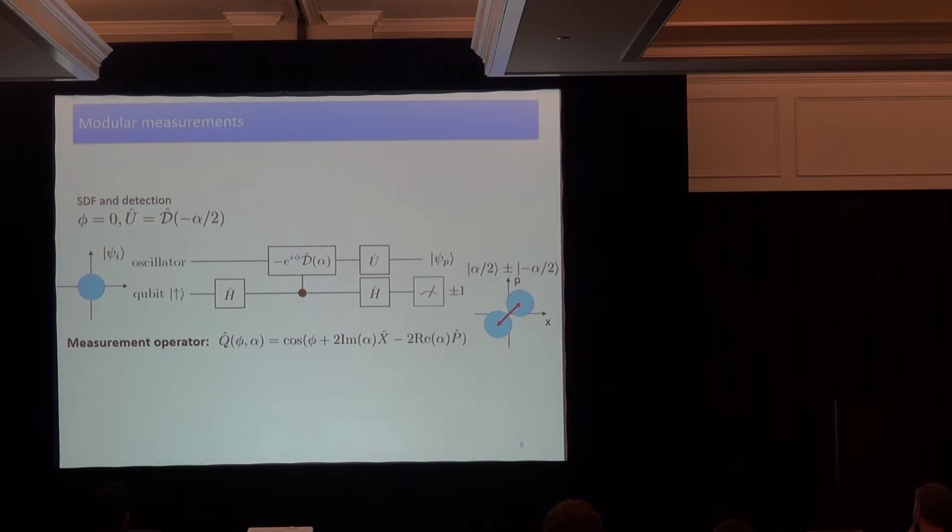What I told you so far can actually already be viewed as one of these modular position or momentum measurements. And for more theoretical people, I redrawn the measurement in the circuit model here. So if we just do state-dependent force and the fluorescence detection, it's this circuit, but we don't have control over the phase phi here. And this final unitary is given by this displacement operator. And indeed, the measurement operator viewing this as a measurement of the oscillator is given by the cosine of the position and momentum operator with the pre-factor which we can control via our displacement alpha.